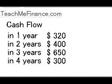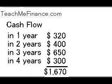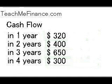The question is, how much money are you going to have four years from today? Well, one thing you could do is just add these numbers up: $320, $400, $650, and $300 — that comes out to $1,670. And that's true, but you also have to assume that you're going to earn interest after you receive the money.